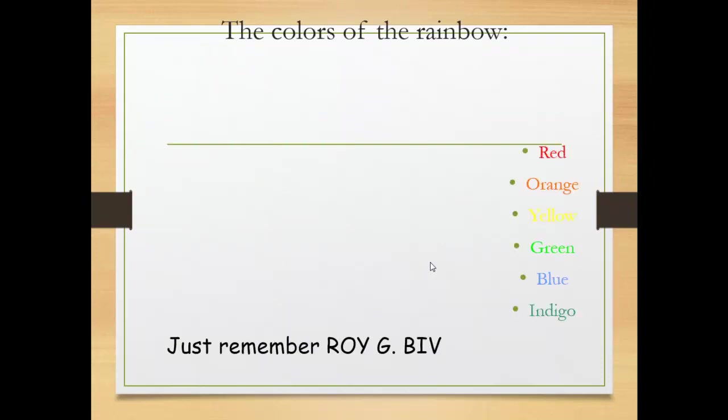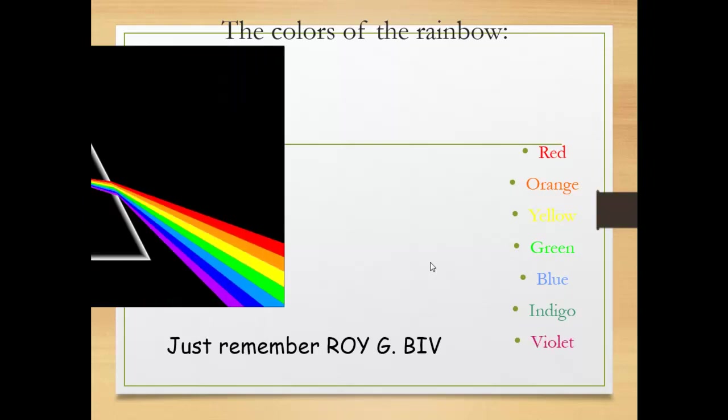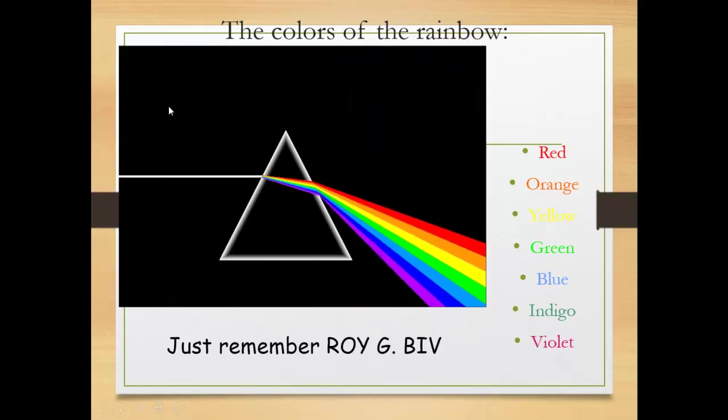The rainbow: red, orange, yellow, green, blue, indigo and violet. This is a prism. What is the function of this prism? It separates the white light into seven spectrum colors: red, orange, yellow, green, blue, indigo and violet.